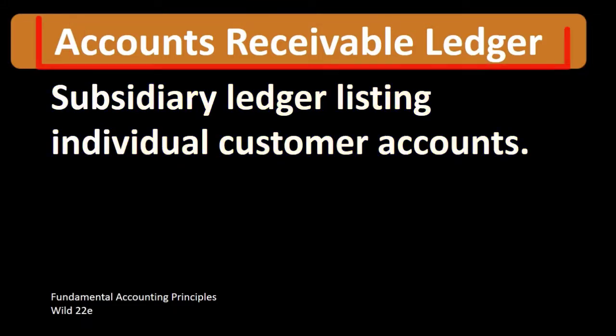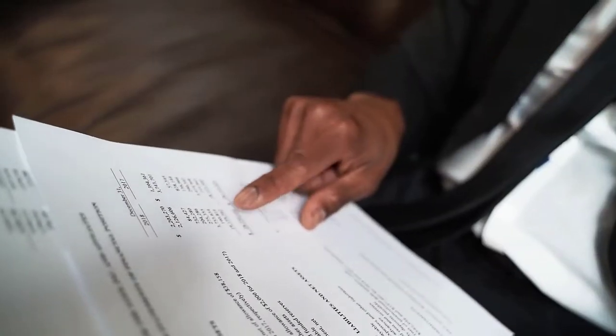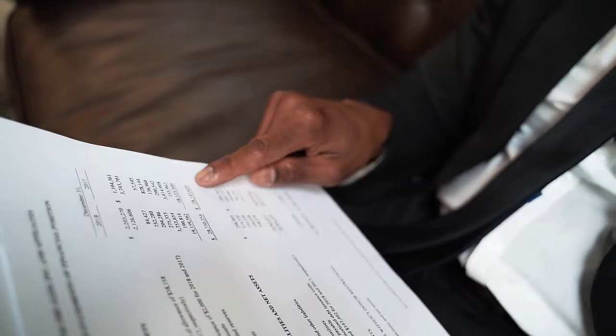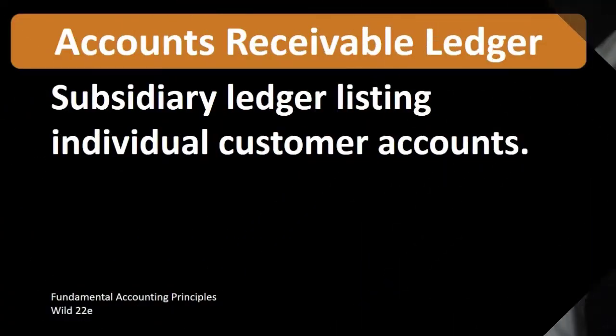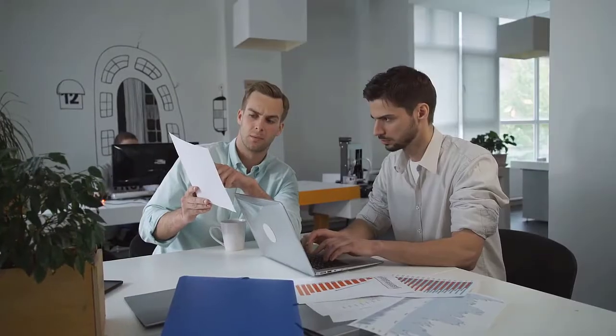When we think about the accounts receivable ledger, we can think of it as backing up the amount in accounts receivable on the balance sheet or the trial balance. We're backing it up not by date — we don't want to know the order of the transaction.